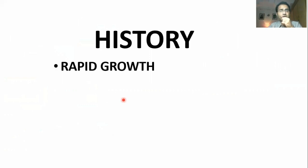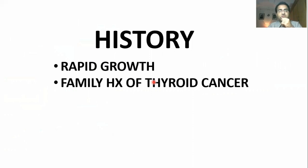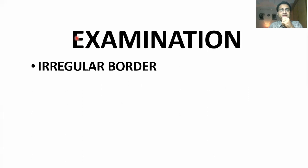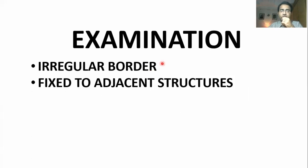You can get a lot of information from the history. The most important features: rapid growth of the nodule is a malignant feature. Family history of thyroid cancer — certain multiple endocrine neoplasia (MEN) syndromes involve a genetic problem with increased risk of thyroid cancer that runs in families. Radiation exposure is the single most important risk factor in history.